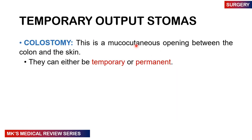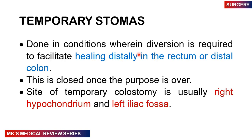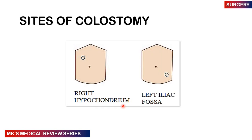Temporary output stomas may also include a colostomy, which is a mucocutaneous opening between the colon and the skin. This can be temporal or permanent. Temporal stomas are done in conditions where diversion is required so that the distal part — the distal rectum or distal colon — can heal. It is closed after the purpose has been served and the patient must go for surgery again. The site of a temporal colostomy is usually in the right hypochondrium or the left iliac fossa.